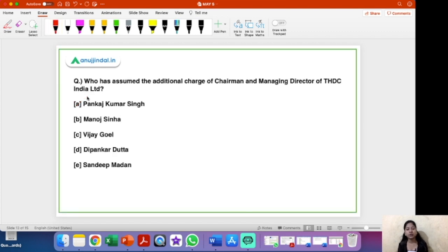Who has assumed the additional charge of chairman and managing director of THDC India Limited? So first of all this THDC is a power utility and electricity company. So you have five options again: Pankaj Kumar Singh, Manoj Sinha, Vijay Goyal, Dipankar Dutta, Sandeep Madan. Out of these five options the right answer is option C, Vijay Goyal.